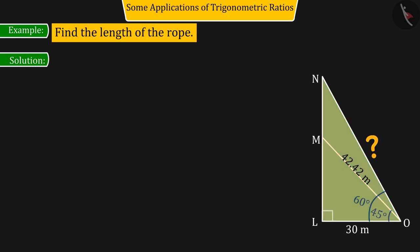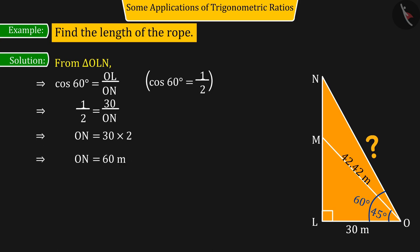Similarly, he also discusses about the right angle triangle O, L, N. And by getting the trigonometric ratio cos 60 degrees equals O, L divided by O, N, and on substituting and solving their values, the value of O, N is 60 meters.